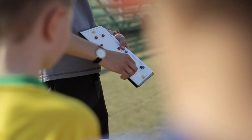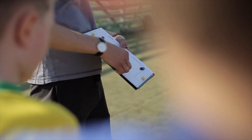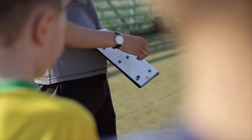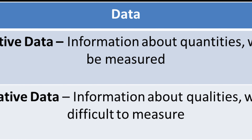Feedback given to performers, and particularly extrinsic feedback, can be based on data. There are two types of data: quantitative data, which is numerical and includes stats that can be compared and measured, and qualitative data, which is information about qualities and is more difficult to measure.